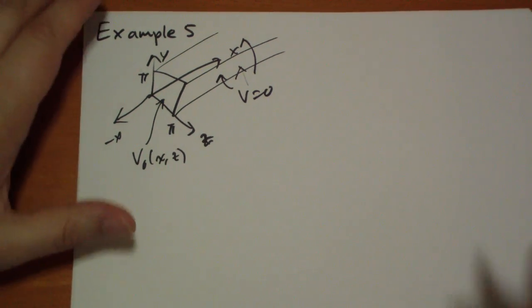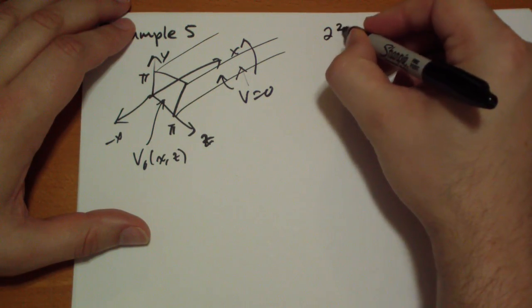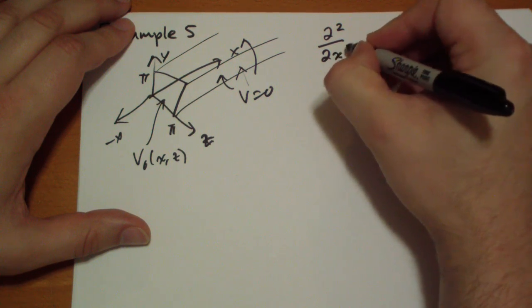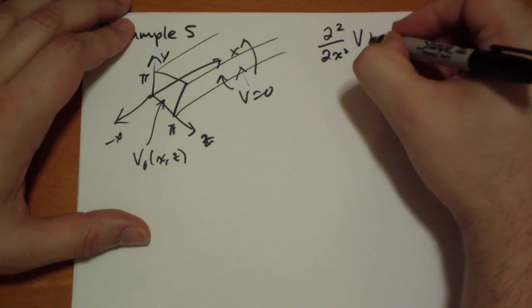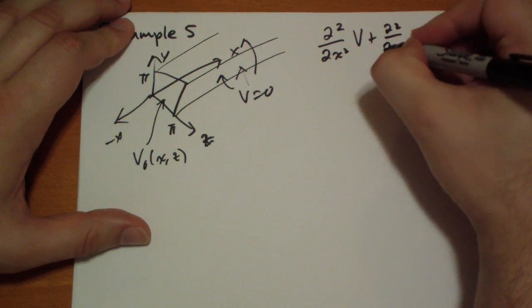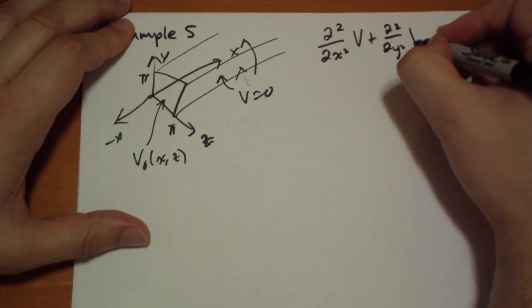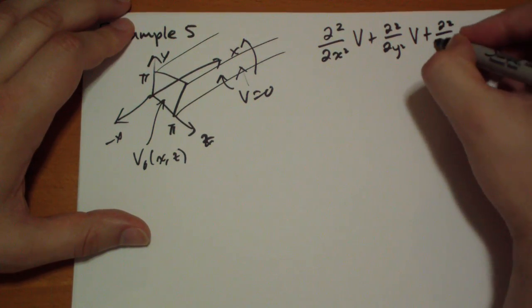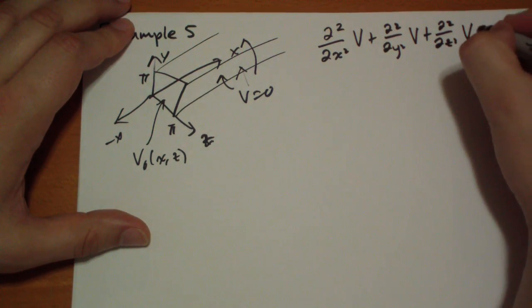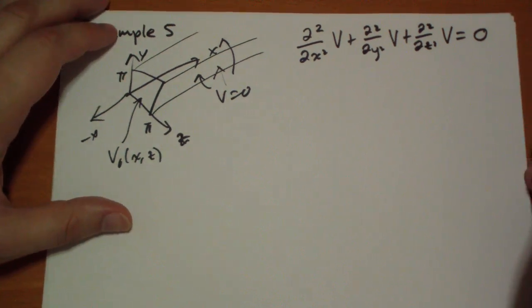So let's write out the equation that we're going to be trying to solve. So we no longer have that symmetry where we can eliminate one of the variables. So we have d squared by dx squared of v plus d squared by dy squared of v plus d squared by dz squared of v is equal to zero. There's no charge on the inside of Laplace's equation.